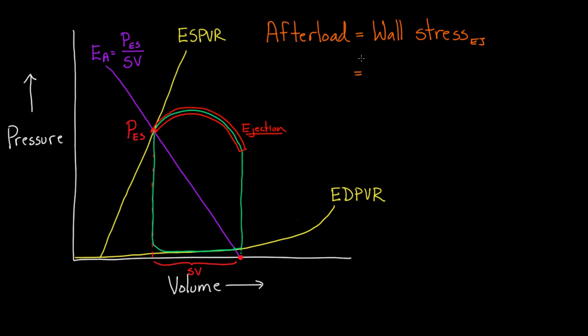During the entire ejection phase, wall stress is our afterload. We wrote this out as Laplace's law: pressure times radius of the left ventricle during ejection divided by two times the wall thickness during ejection. This is the formula for afterload occurring during the entire ejection. But for simplicity, since we don't calculate all points, we often look at the pressure at end-systole.